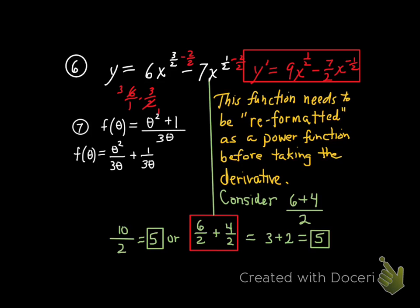After all, 6 divided by 2 is 3 and 4 divided by 2 is 2. And you get 5. We got 5 either way. Okay? So now, let's apply that reformatting skill to problem number 7. So I'm going to rewrite this as two fractions. I have the numerator, first term, that's theta squared over 3 theta, plus the second term on top, 1 over 3 theta.